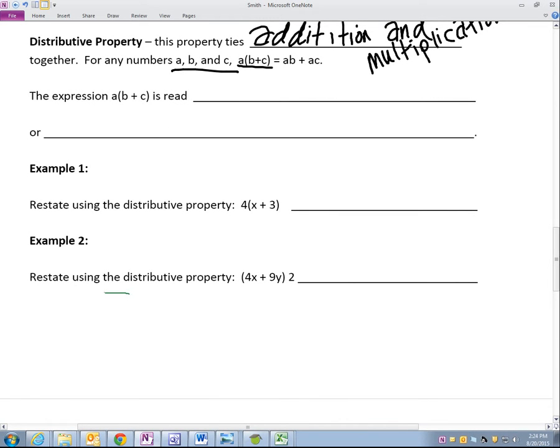The distributive property ties addition and multiplication. For any numbers A, B, and C, stop clicking your pen. I don't know why you have a pen out right now anyway.